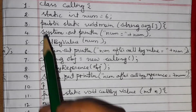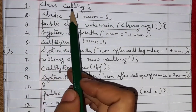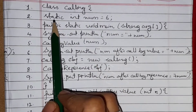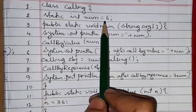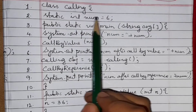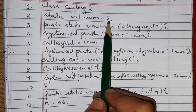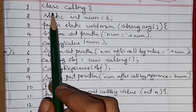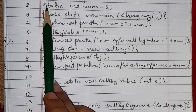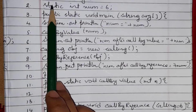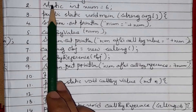We have created a class called 'Calling'. Inside it, we have 'static int num = 6', meaning this is an integer type variable whose initial value is 6. I have written 'static' because a static variable is going to be common for all objects in the program.